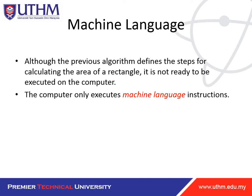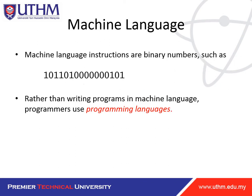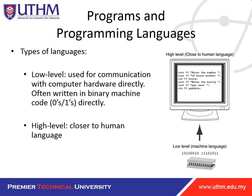The algorithm defines the steps for calculating the area of a rectangle, but it is not ready to be executed on the computer. The computer only executes machine language instructions. The algorithm prepares us and shows the steps, but we need to use machine language for the computer. Machine language uses binary numbers such as 1, 0, 1, 1 — ones and zeros.